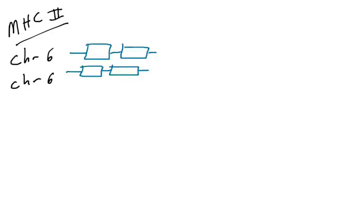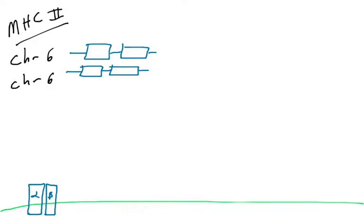Now we're going to talk about the MHC class 2 molecule and the genes that encode for the proteins found in it. So, we're back to chromosome 6, to the MHC — the major histocompatibility complex — the large region of chromosome 6 which contains the genes that code for the proteins involved in antigen presentation. When we talk about the MHC class 2 molecule, we're talking about this dimer: there's an alpha chain and a beta chain, and it presents peptides to CD4-positive T cells.